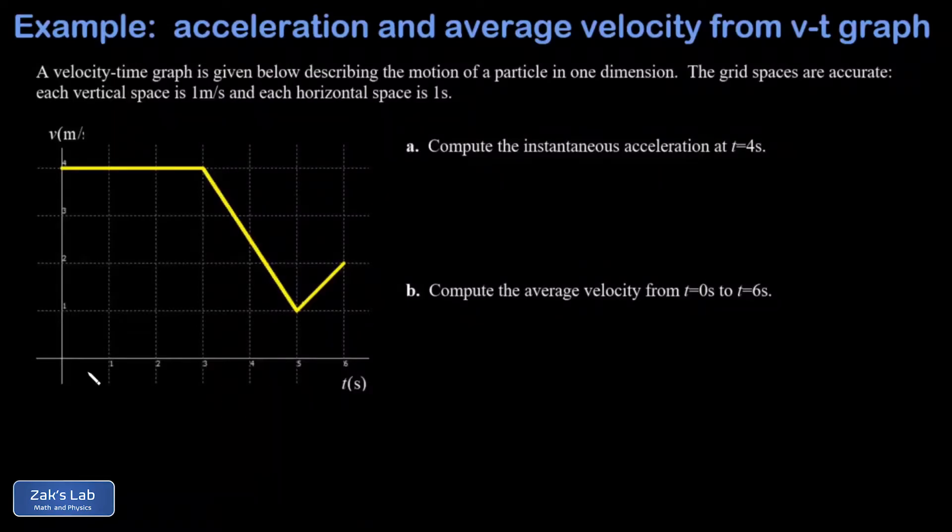In this video we're given a velocity-time graph and then we're asked to find the instantaneous acceleration at a particular moment in time, and in part b we're asked to find the average velocity on a time interval. We're told the grid spaces can be trusted in this graph, and I'll just adjust my title real quick, that's velocity.